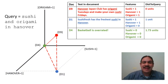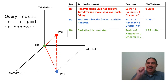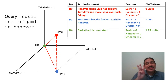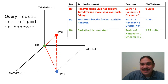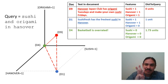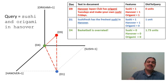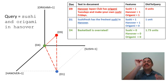Here is a summary of what we studied last time. We have a three-dimensional system because we have three features: whether a document has the word 'sushi' or not, whether it has the word 'Hanover' or not, and whether it has the word 'origami' or not. With that we can put our documents in this three-dimensional space. Document D9 — 'Hanover Japan Club has Origami Tuesdays and Make Your Own Sushi Fridays' — has all three words, so its position is 1,1,1: one step in the sushi direction, one step in the Hanover direction, one step in the origami direction.